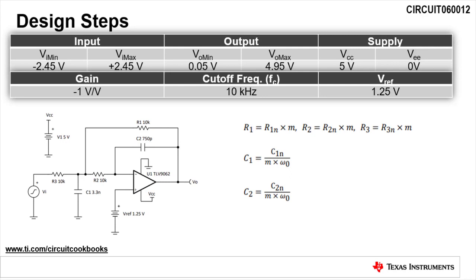Also, we have to scale the cutoff frequency from omega-C to omega-naught. Therefore, you'll notice that the capacitor values are scaled by 1 divided by omega-naught.